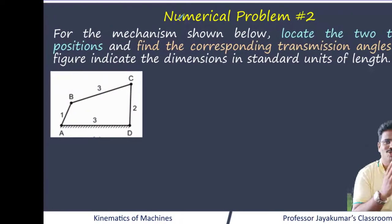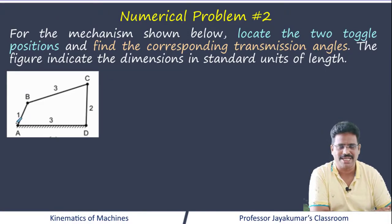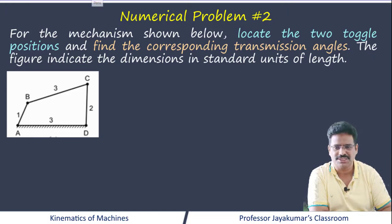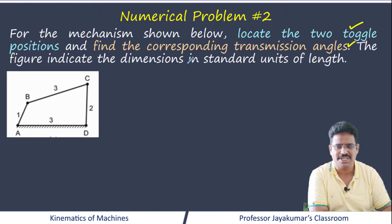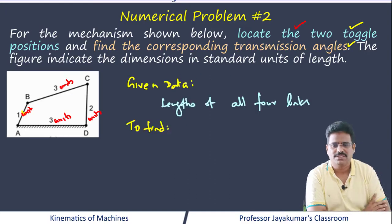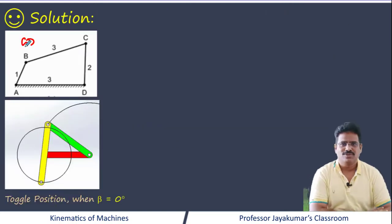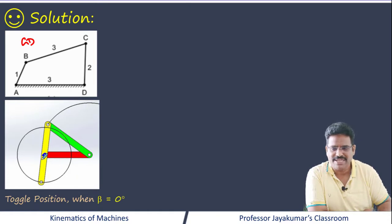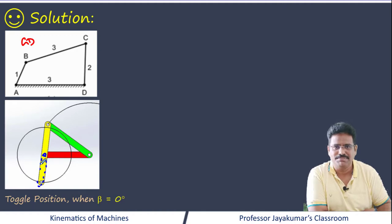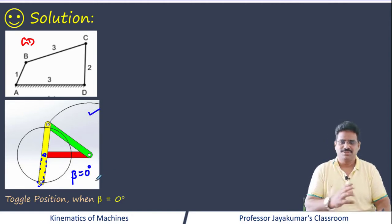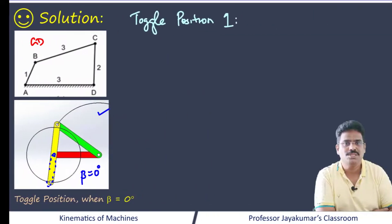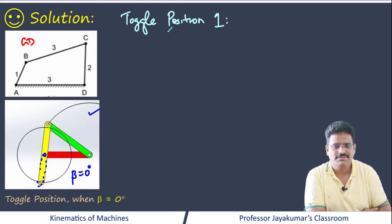Now let us solve problem number 2. For the given mechanism shown, we need to locate the two toggle positions and also find the corresponding transmission angles. The figure indicates dimensions in standard units. We need to draw the two toggle positions and find the transmission angle for toggle position 1 and toggle position 2. From our theory, we know toggle position occurs when the angle between the input crank and the coupler is 0 degrees — that is when beta equals 0 degrees.